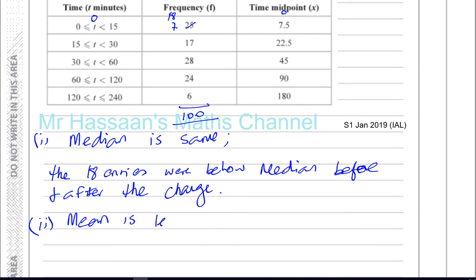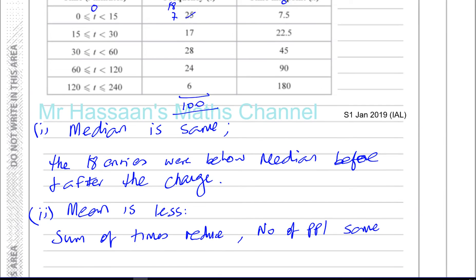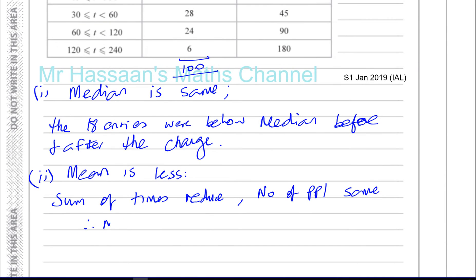But the number of people in the survey is still the same. It doesn't mean these 18 people are out of the survey. They're still being asked and they gave the answer of zero now. So we can say that the mean is going to be reduced. The mean is going to be less. And the reason being is because we can say the sum of the times will be reduced and the number of people, the frequency, will be the same. Therefore, the mean is going to be less.